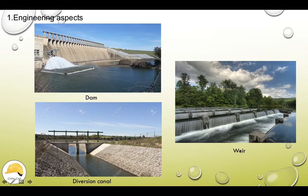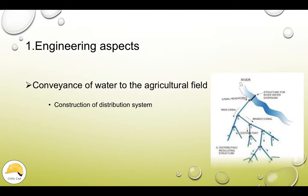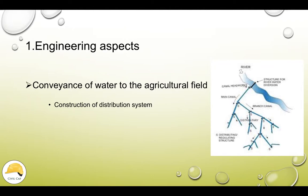This is the weir. The weir is regulated by the river; the flow is regulated by the water. This is the diversion canal. The next point is conveyance of water to the agricultural field. We collect the water from the agricultural field through a huge canal system. There are many canals — we collect water from the main canal. These are the irrigation structures.